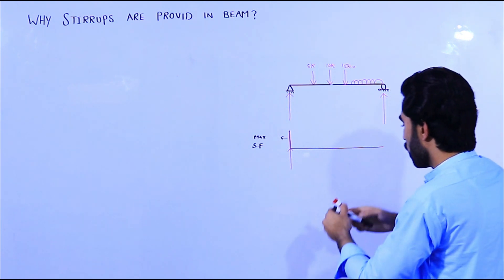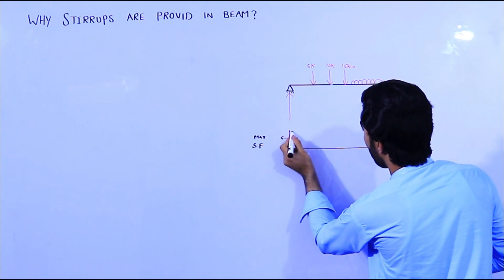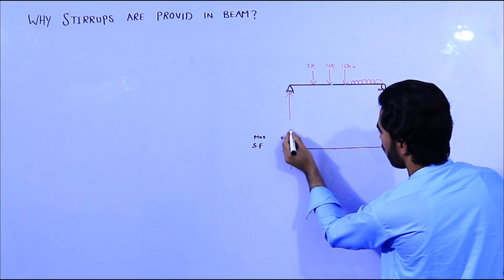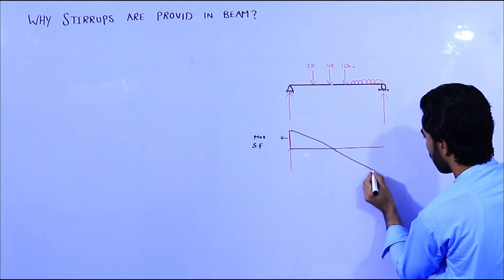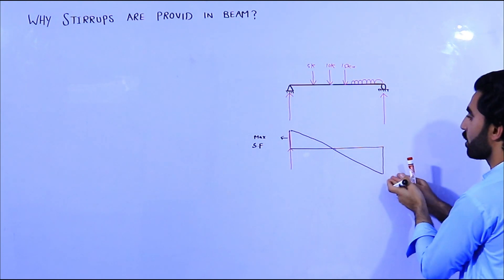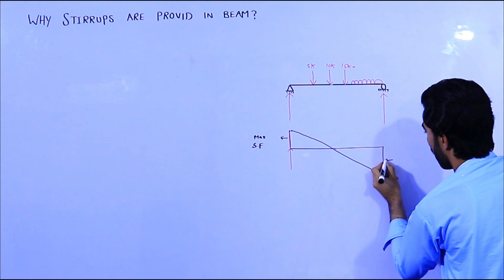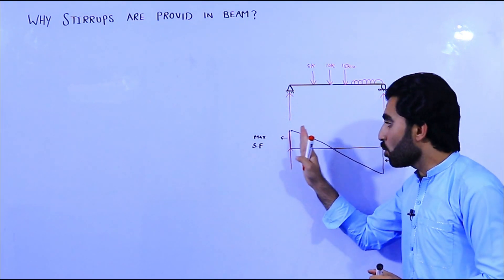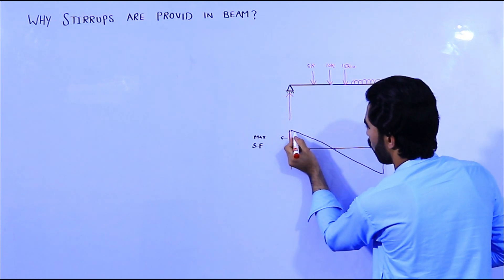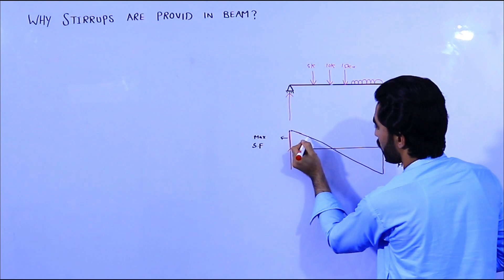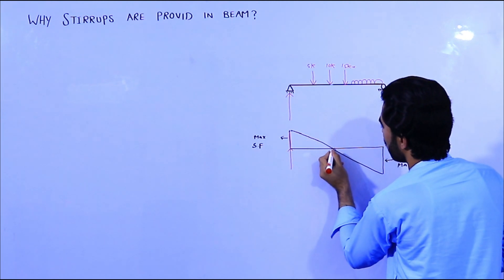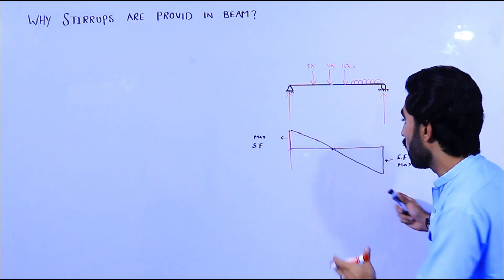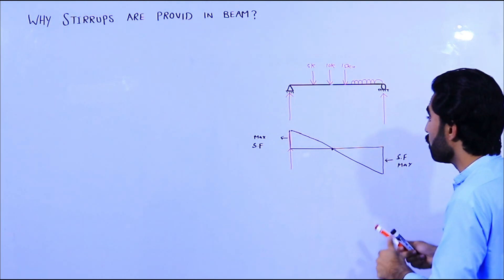The shear force wants to slip a section, so it becomes like this in the diagram. Here at the support is maximum again - you can see downward, this is maximum. At this point shear force is maximum, also at this other support point. But near the midpoint you can see the shear force becomes low - minimum here, and at the midpoint shear force is zero. This is the diagram of shear force.